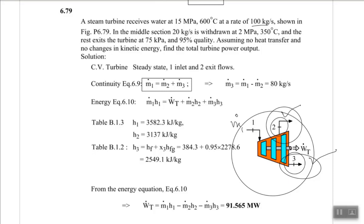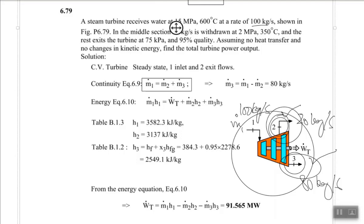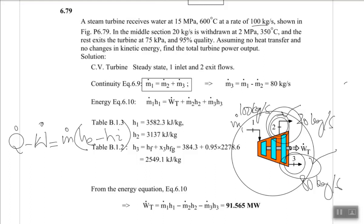From the continuity equation: ṁ₁ = ṁ₂ + ṁ₃. With 100 kg/s entering and 20 kg/s leaving at state 2, the remaining 80 kg/s exits at state 3. Since there is no heat transfer and no kinetic or potential energy changes, the energy equation simplifies to: Ẇ = ṁ₁h₁ − ṁ₂h₂ − ṁ₃h₃.